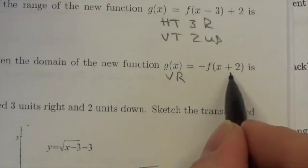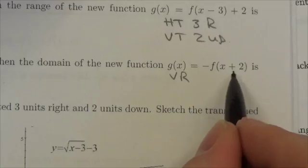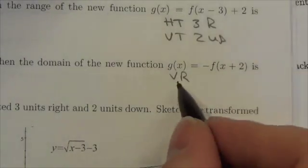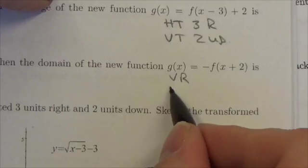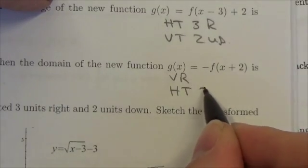x plus 2, well, think about what I would have to do to get x by itself. I would have to subtract 2 from this expression here. So subtracting 2 corresponds to left 2. So the horizontal translation, 2 to the left.